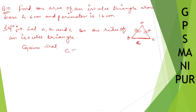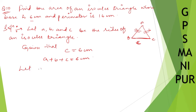Given that C is equal to 6 cm — this base is 6 cm. And A plus B plus C is equal to 16 cm. Since it is an isosceles triangle, the two equal sides: let A is equal to B is equal to X.